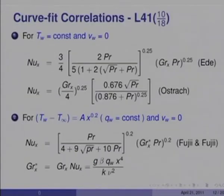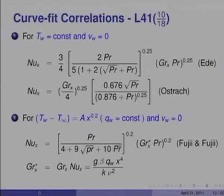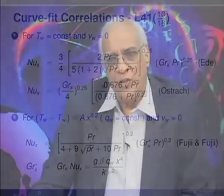For T_w = constant and V_w = 0, curve-fit correlations have been obtained. A correlation due to Eid and another due to Ostrach is given; the Ostrach solution is often found in undergraduate textbooks. For T_w − T_∞ = A·x^0.2 (constant wall heat flux) with V_w = 0, a correlation by Fuji and Fuji is given, where Gr* is based on q_w·x⁴/(k·ν²). These correlations express the solutions from previous slides as functions of Prandtl number.